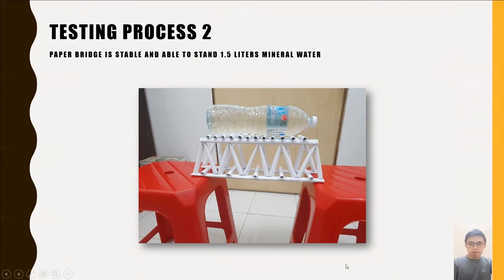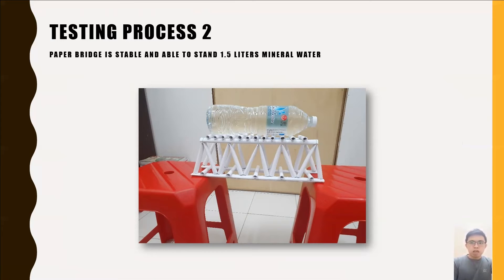The purpose of Testing Process 2 is to test and observe the stability of the paper bridge after the improvements. Based on observations for Testing Process 2, the paper bridge is stable and able to withstand the load of a 1.5-litre mineral water bottle after the design improvements. The paper bridge was placed between two chairs and the 1.5-litre water bottle was placed slowly and horizontally on the bridge. As a result, the paper bridge successfully withstood the load of the mineral water and did not fall or collapse.